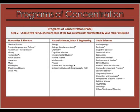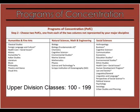To complete each program of concentration, you must take six four-unit classes, three of which must be upper division — classes numbered 100 through 199.